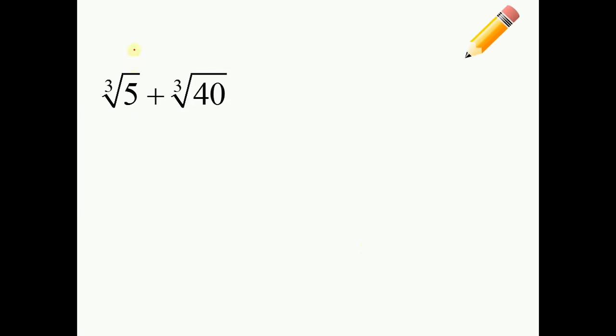So, example three. This guy's example three. Notice, they are the same index. So, we can combine these. But they need to also be the same radicand. Which in this case, they're not, right? So, I'm going to simplify the cube root of 40. I need to find a perfect cube that's in 40. Eight goes into 40, right? So, cube root of eight times the cube root of five. And I know the cube root of eight is two. So, I can simplify this one into two times the cube root of five.